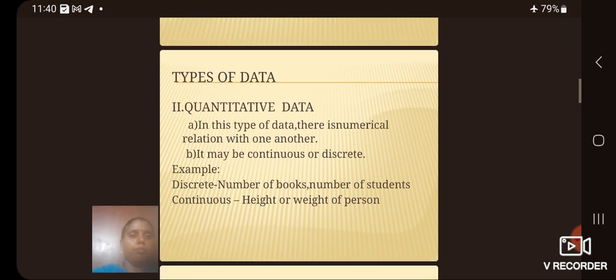Types of data. Quantitative data. In this type of data there is numerical relation with one another. It may be continuous or discrete. Example: discrete - number of books, number of students; continuous - height or weight of person.